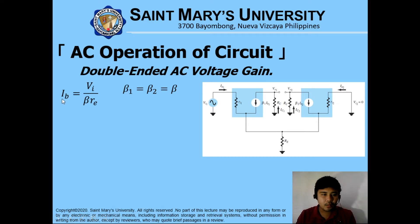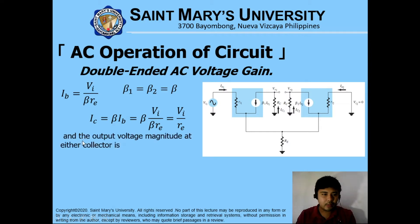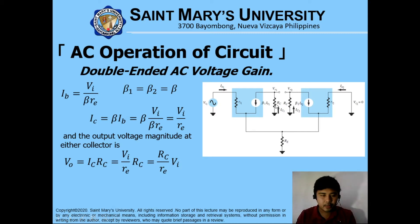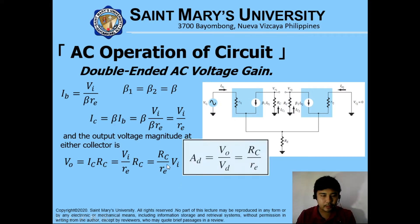Considering IB and the same beta for the two transistors, our IC is now equivalent to VI over RE. The output voltage magnitude at either collector is VO equals IC times RC. Since we have one resistor here, the voltage is the same as the voltage drop across RC. Substituting our computed IC, we arrive at the following form: our AC voltage gain for the double-ended AC amplifier is equivalent to VO over VD, or RC over RE.